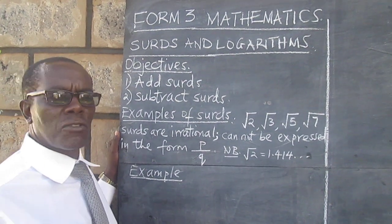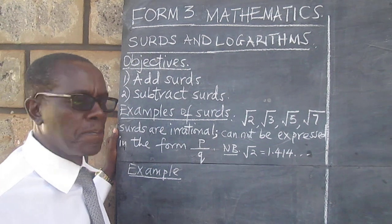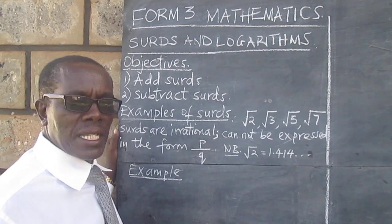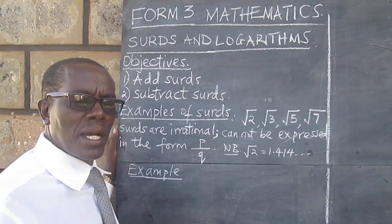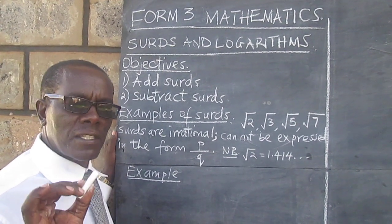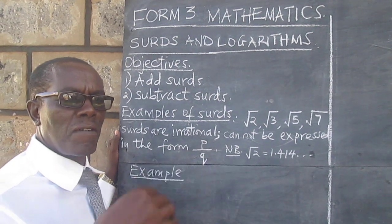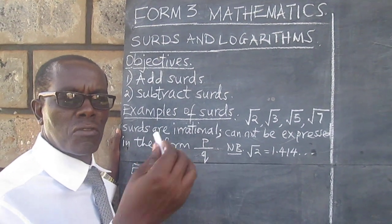We start off with what a surd is. A surd is any number that cannot be expressed in the form of P over Q, in a fractional form.